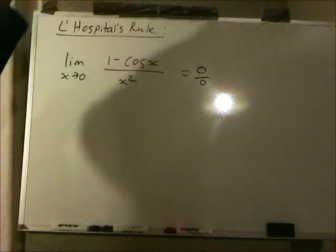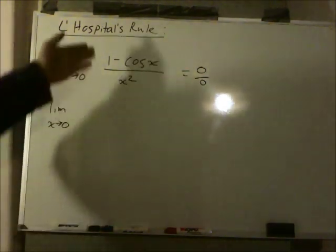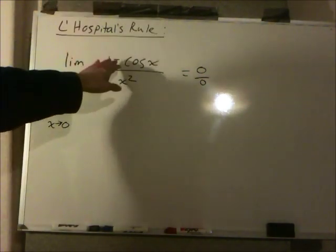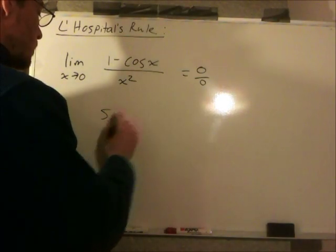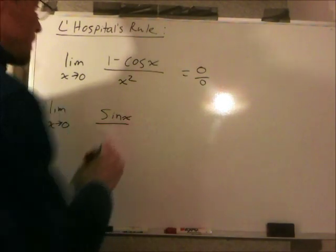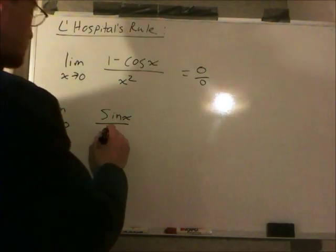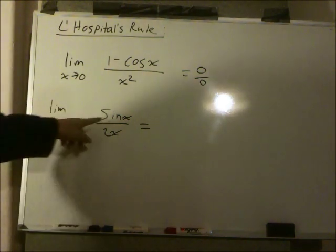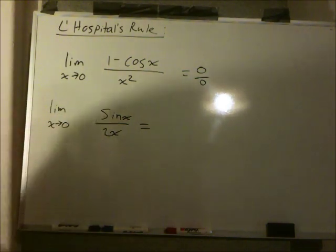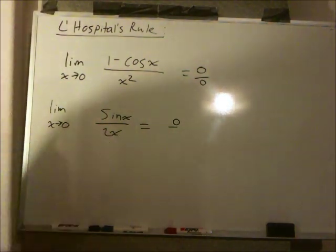So we'll differentiate the numerator and differentiate the denominator and re-evaluate the limit to see what happens. So the derivative of 1 is 0. Derivative of negative cosine is sine. Derivative of x squared is 2x. And now we directly substitute and look at our limit again. Sine of 0 is 0. 2 times 0 is 0.